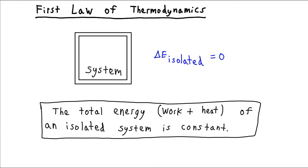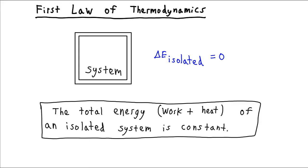Imagine we have some system with an impermeable barrier around it that's not going to allow any heat energy to be transferred, and no work is going to be able to be done on the system — this is going to be an isolated system. The first law of thermodynamics, which is essentially what Joule discovered, is that the total energy within this system — all the work energy and all the heat energy added together — is going to remain constant. Using delta to mean change, the change in energy is going to be zero. It's very convenient to measure energy as a change because then you don't have to figure out what the energy already is.